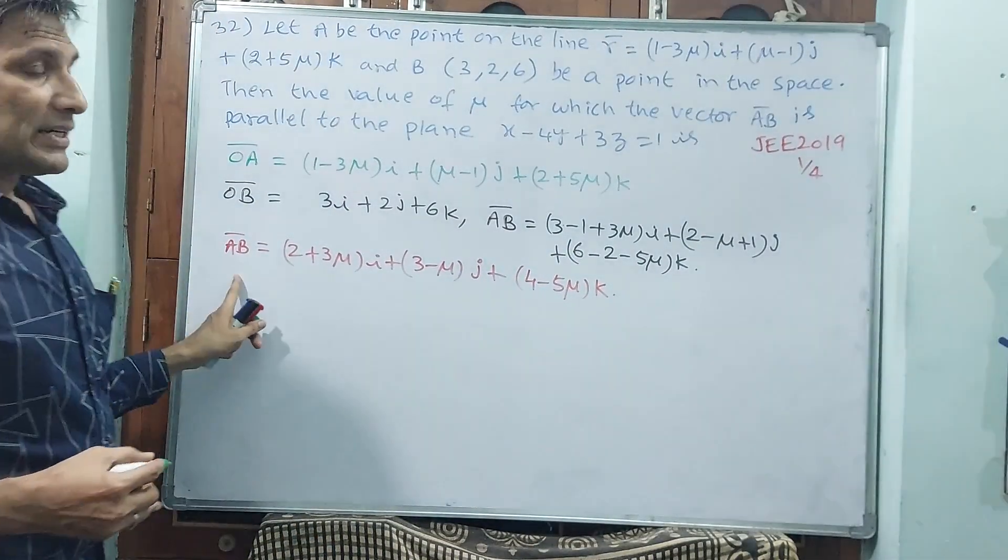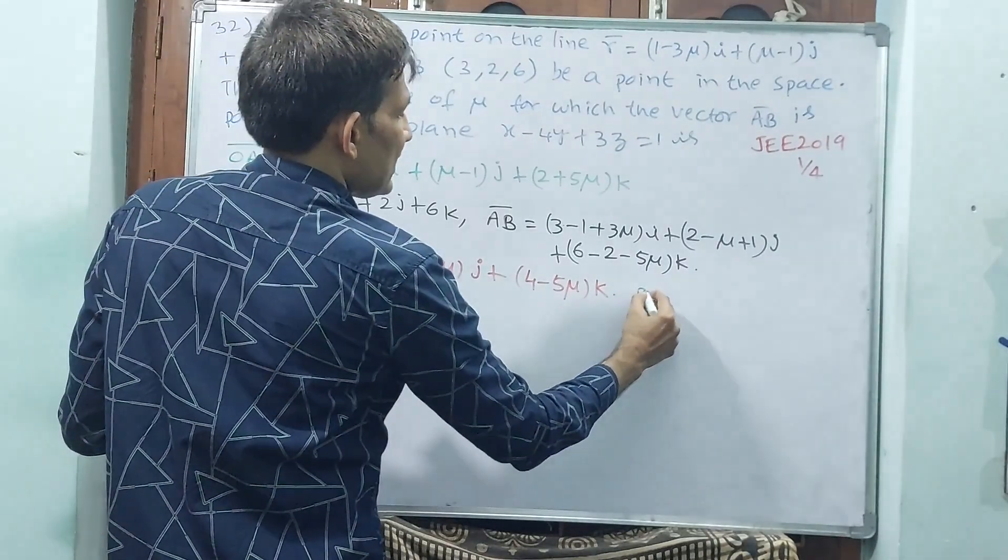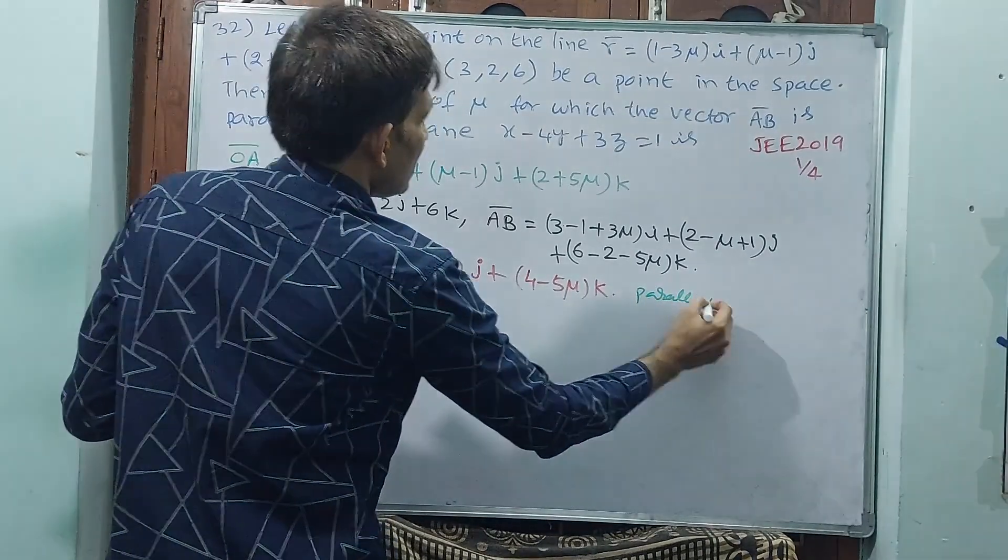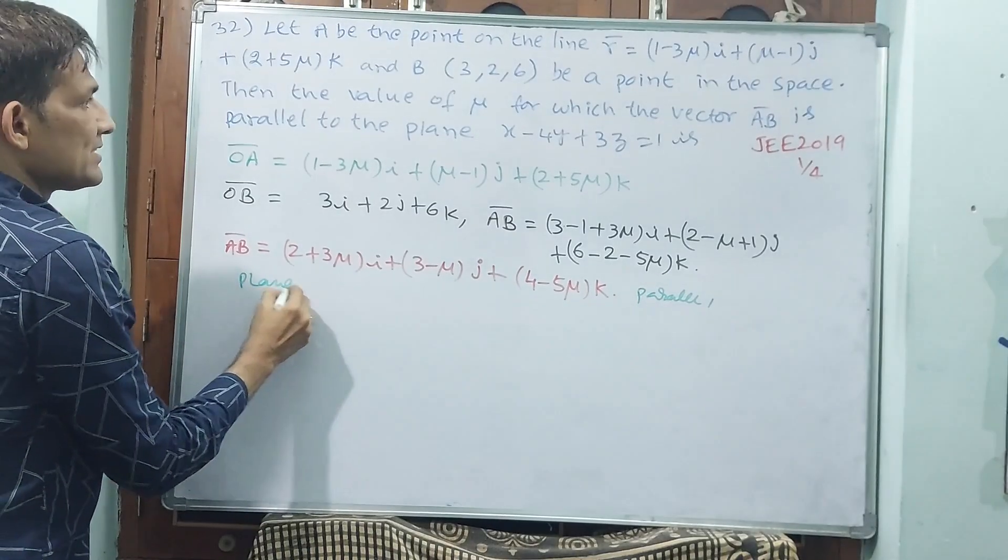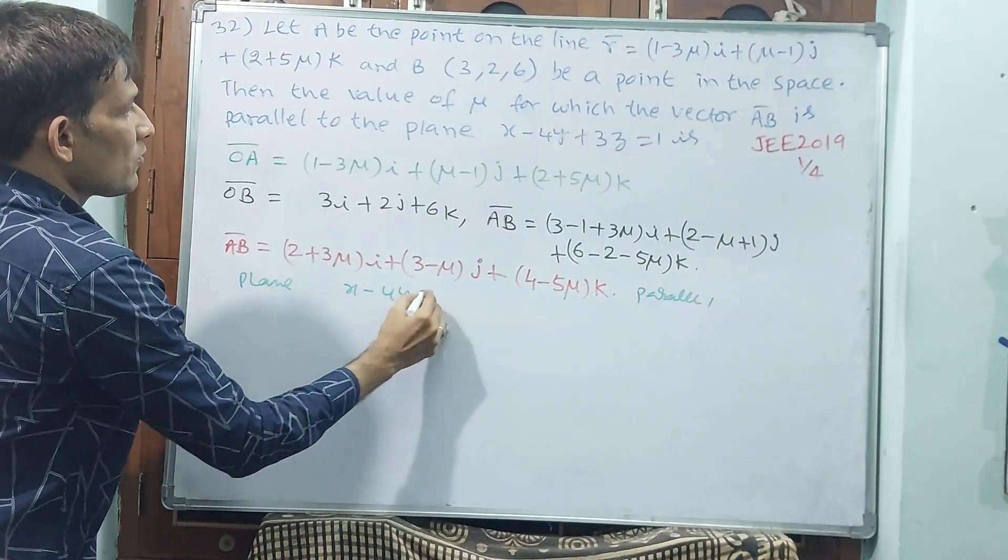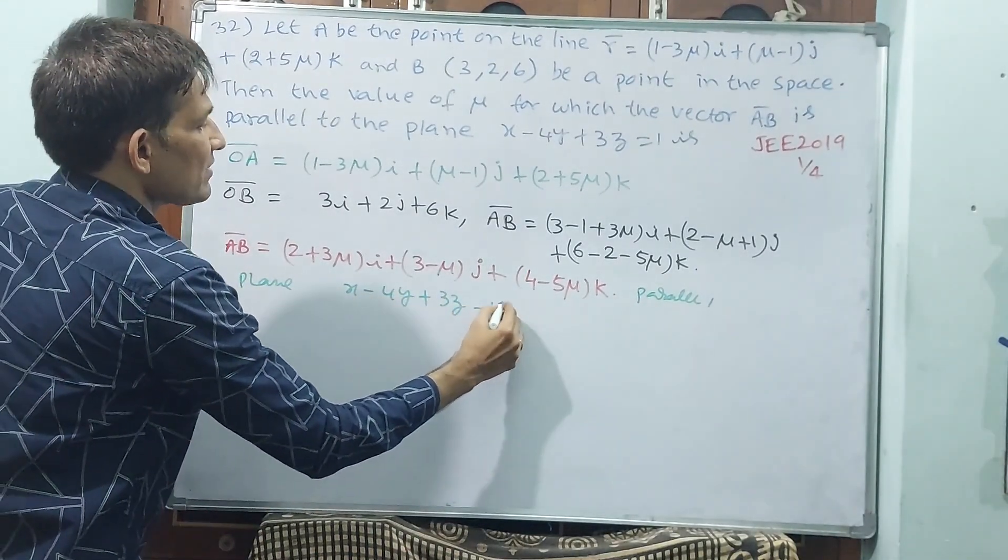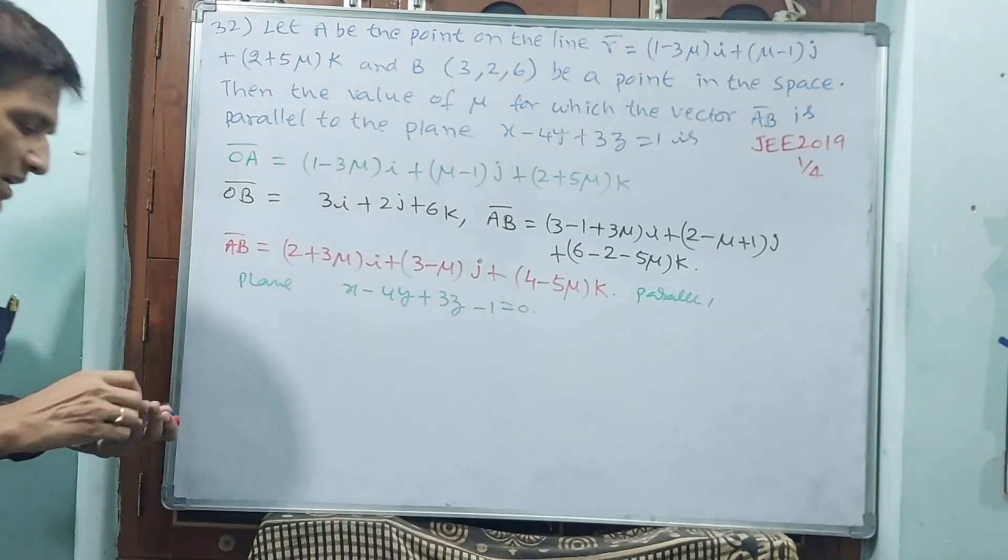See, this vector is parallel to this plane. What is the plane? What is the plane, x minus 4y plus 3z minus 1 equal to 0. See, here what we are going to do?